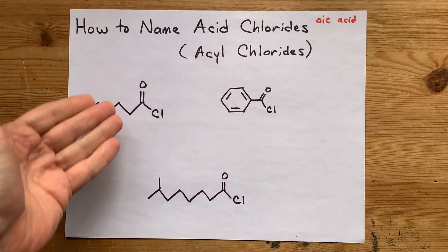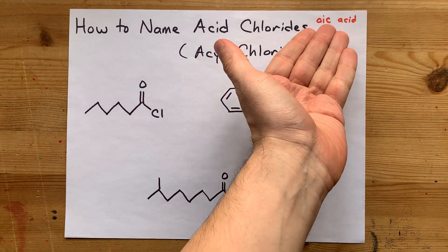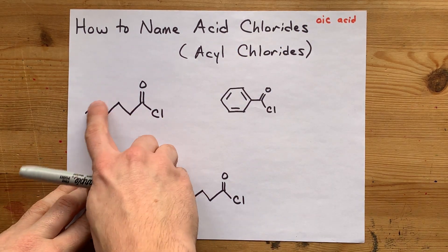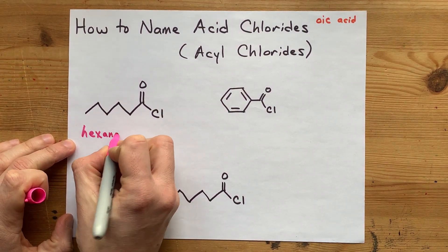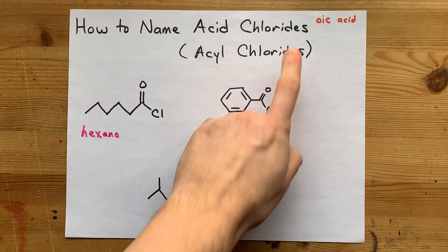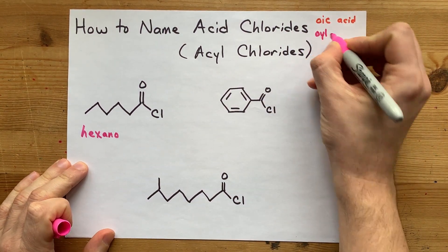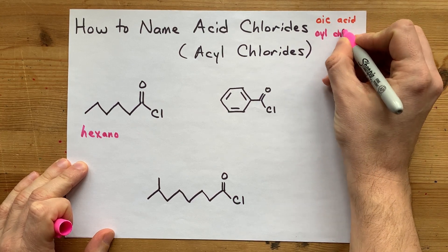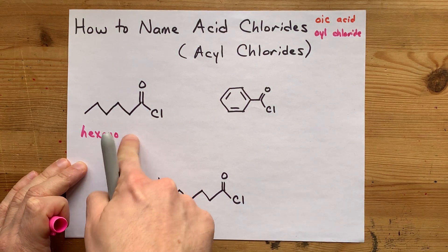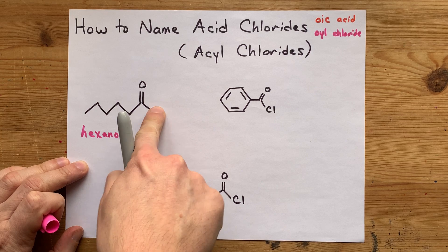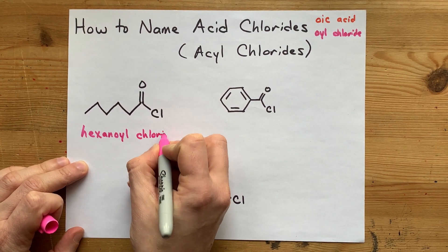The way you name an acid chloride is that if it had been a carboxylic acid, it would have ended with '-oic acid.' In this case, counting 1, 2, 3, 4, 5, 6: hexenoic acid. The '-oic acid' gets converted to '-oyl' and 'acid' gets replaced with 'chloride,' because there's a Cl atom on the molecule. So hexenoic acid, once that OH is replaced with a Cl, it becomes hexenoyl chloride.